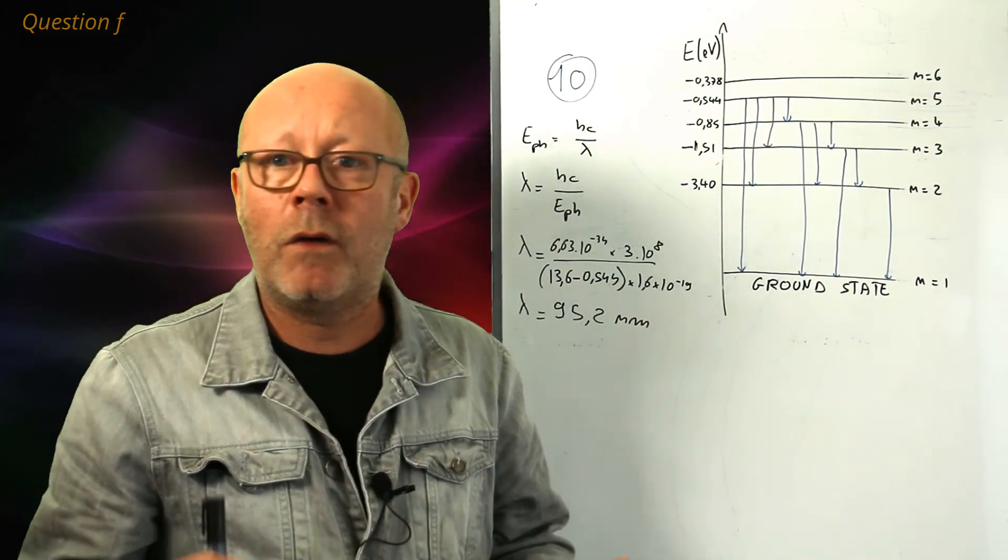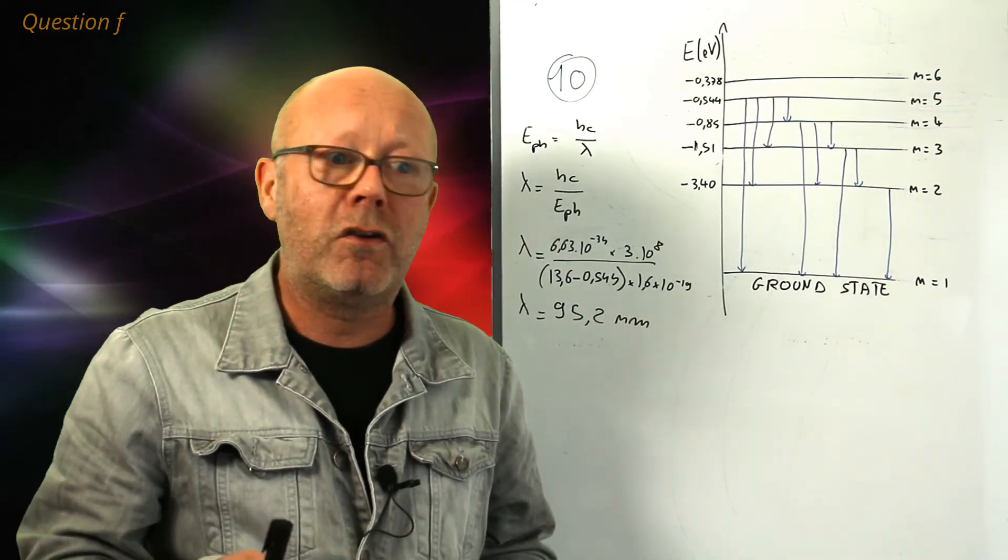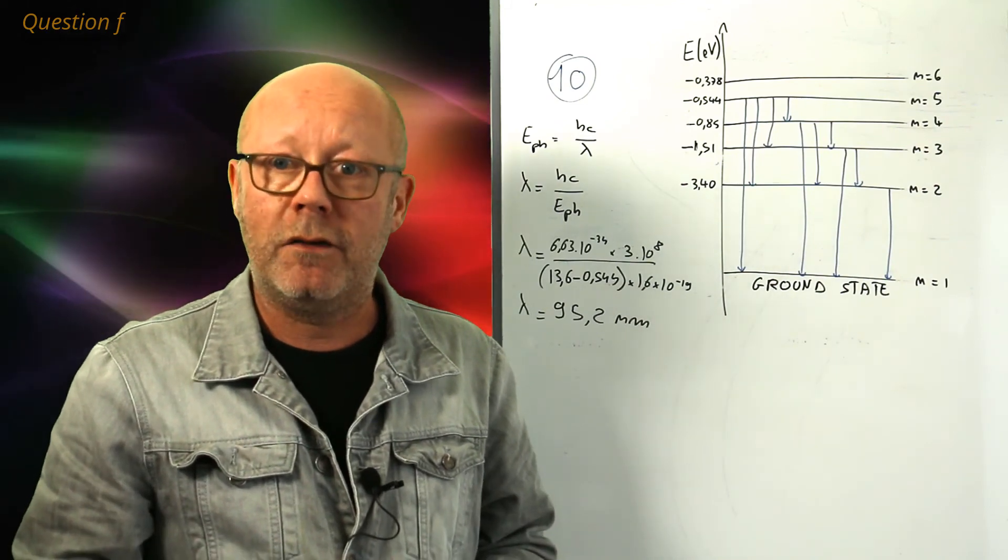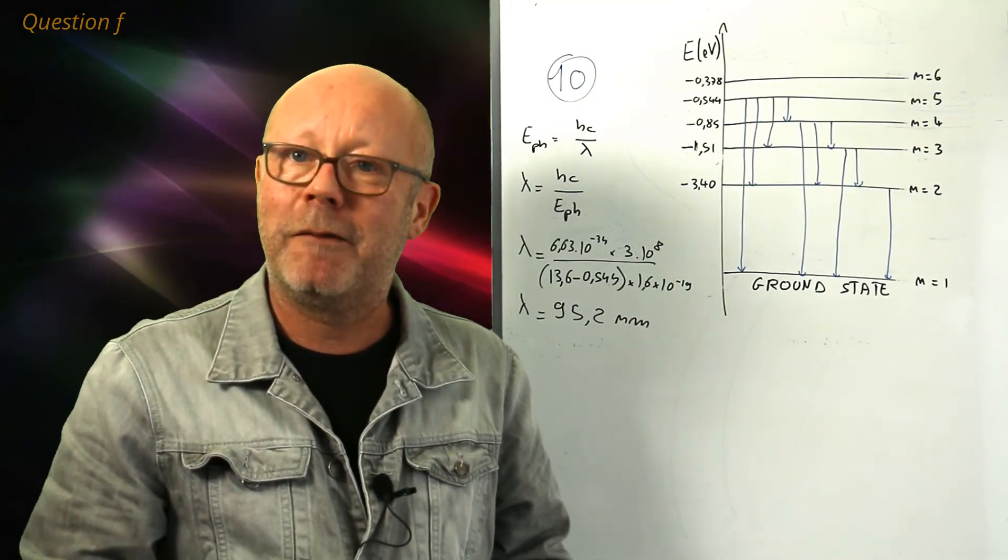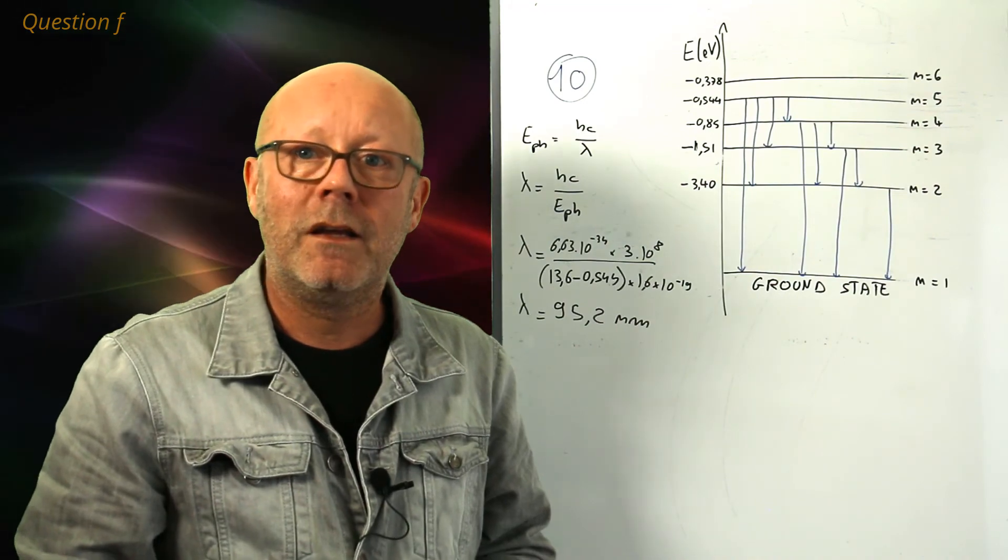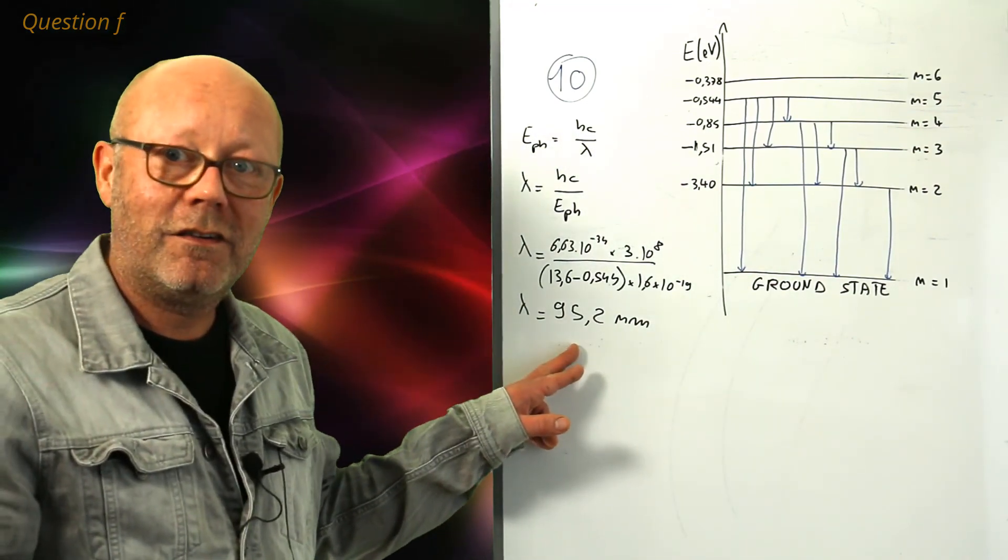If you are slightly above, say, one or two orders of magnitude above 700 nanometers, well, you know, you are in infrared. So, here, this is UV light. So, this concludes this exercise. We've completed it.